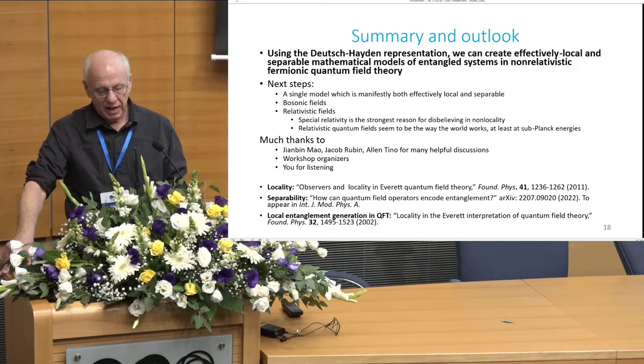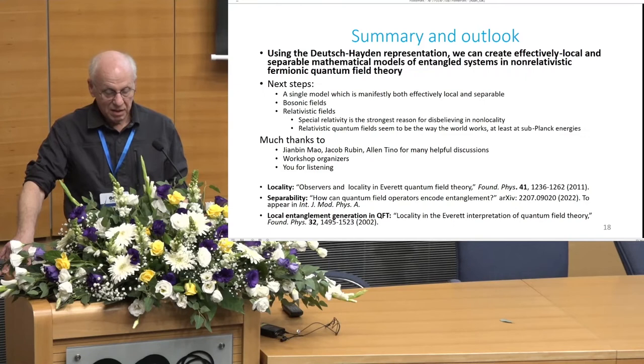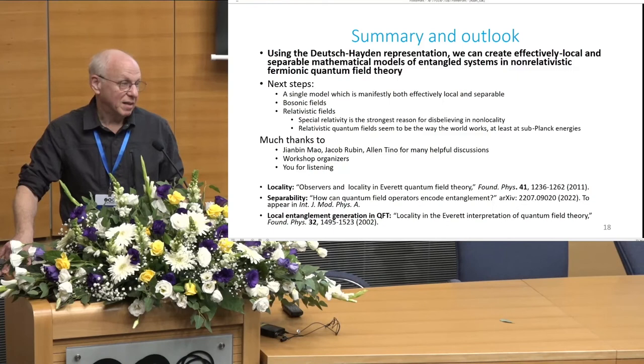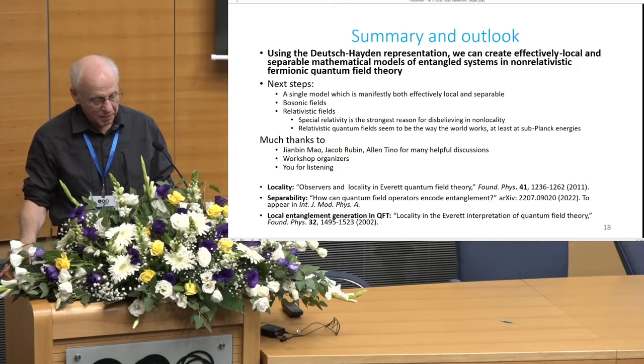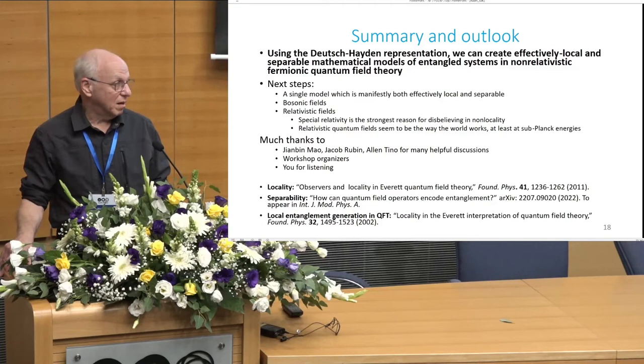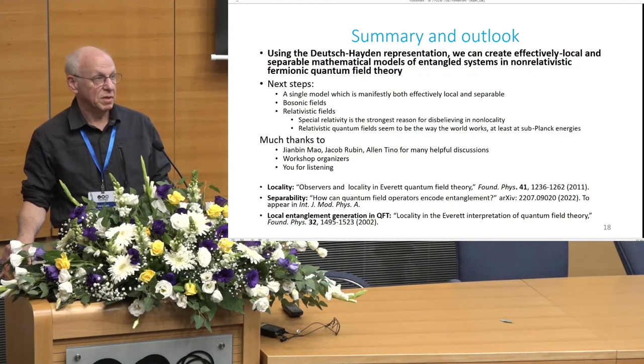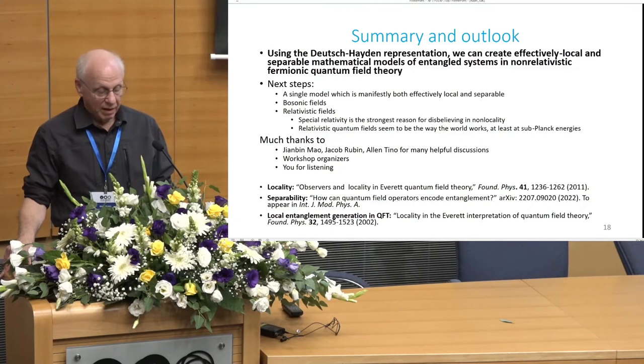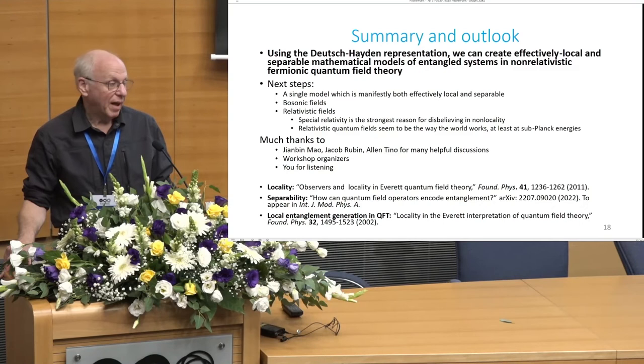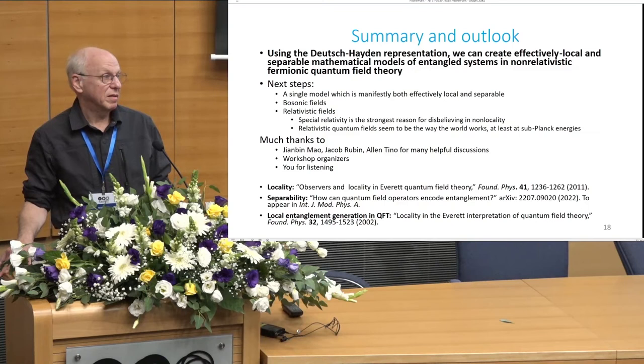Here's where we are and where we're going. Using Deutsch-Hayden representation, we can create effectively local and separable mathematical models of entangled systems in non-relativistic fermionic quantum field theory. As I said, the next step is to include local interaction to get the entanglement in the model that explicitly demonstrates the separability. Beyond that, clearly there are other particles than fermions in the world, namely bosons, and it's important to be able to do this for those kinds of particles also. And, with those in hand, clearly the place to go would be to relativistic fields. Special relativity is the strongest reason we have for not believing in non-locality. And relativistic quantum field theory just seems to be the way the world works.